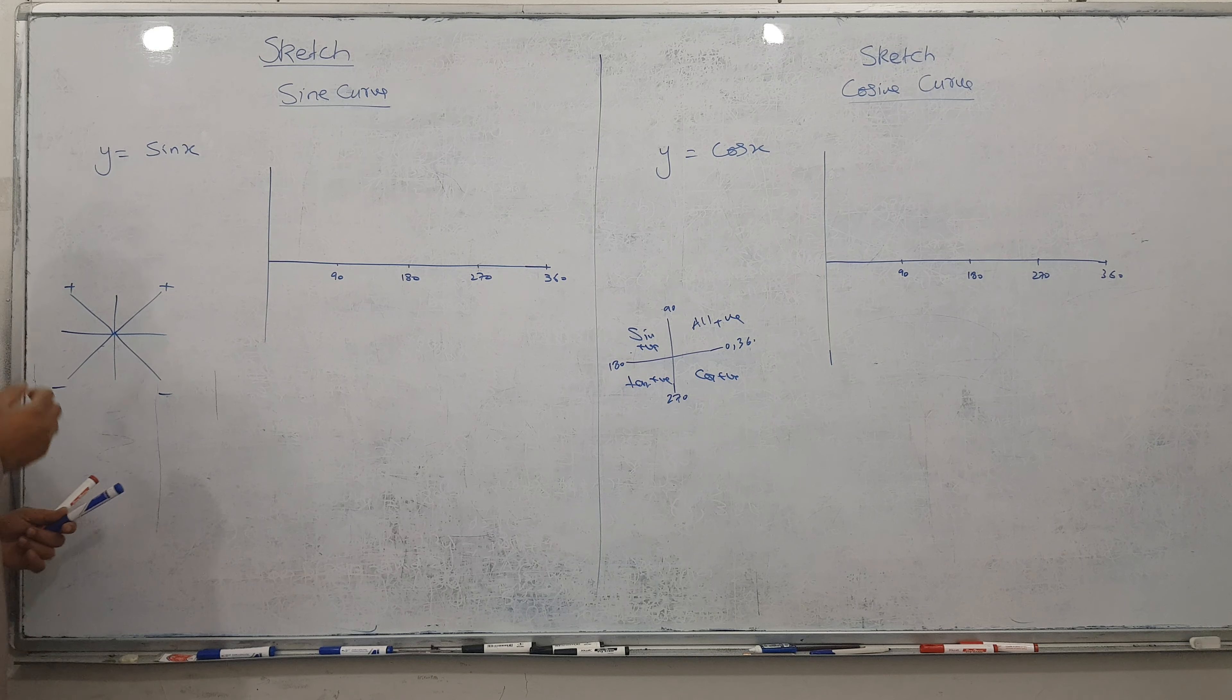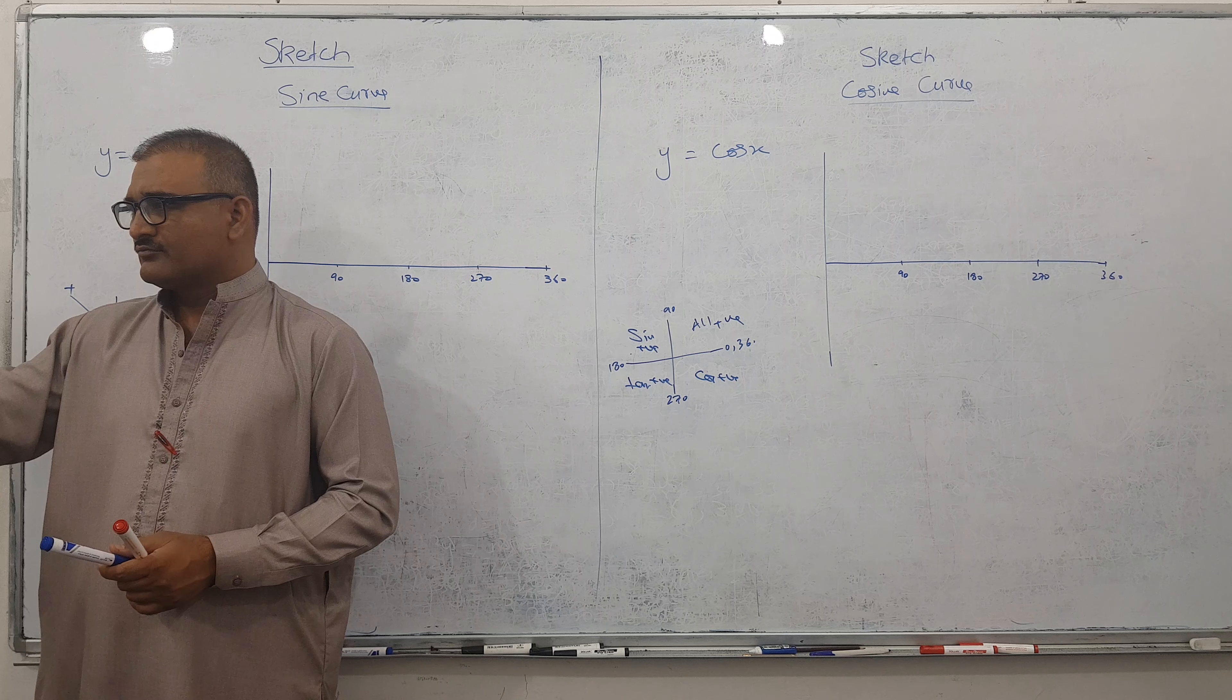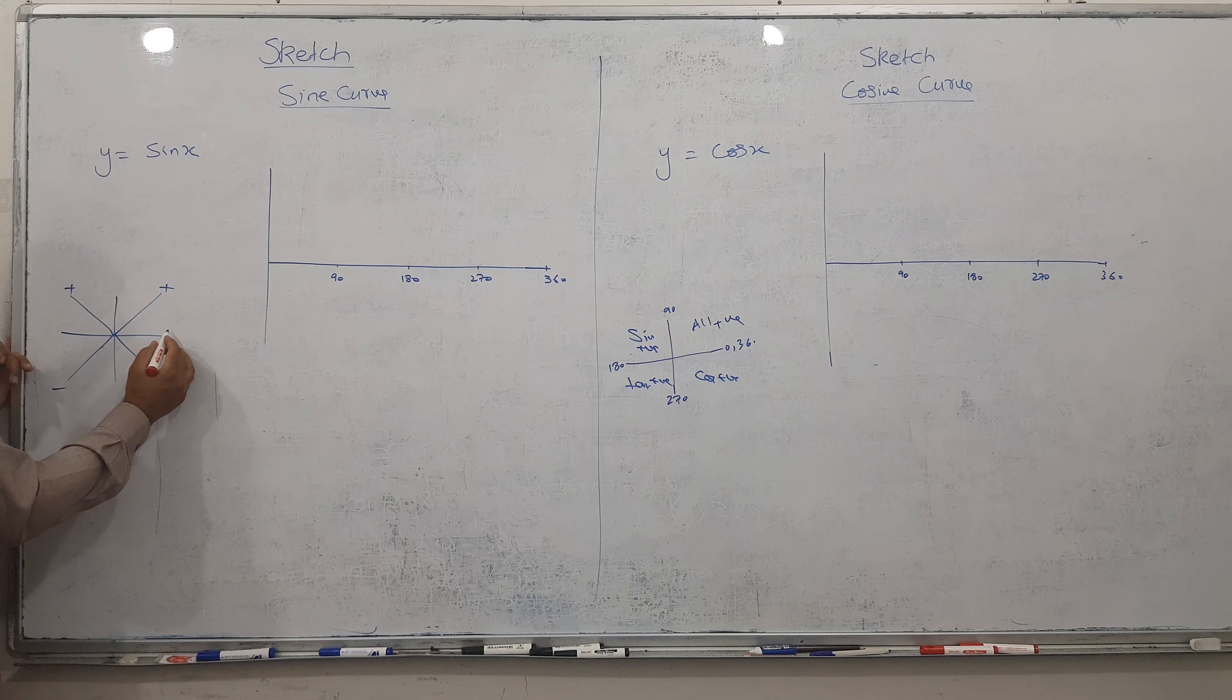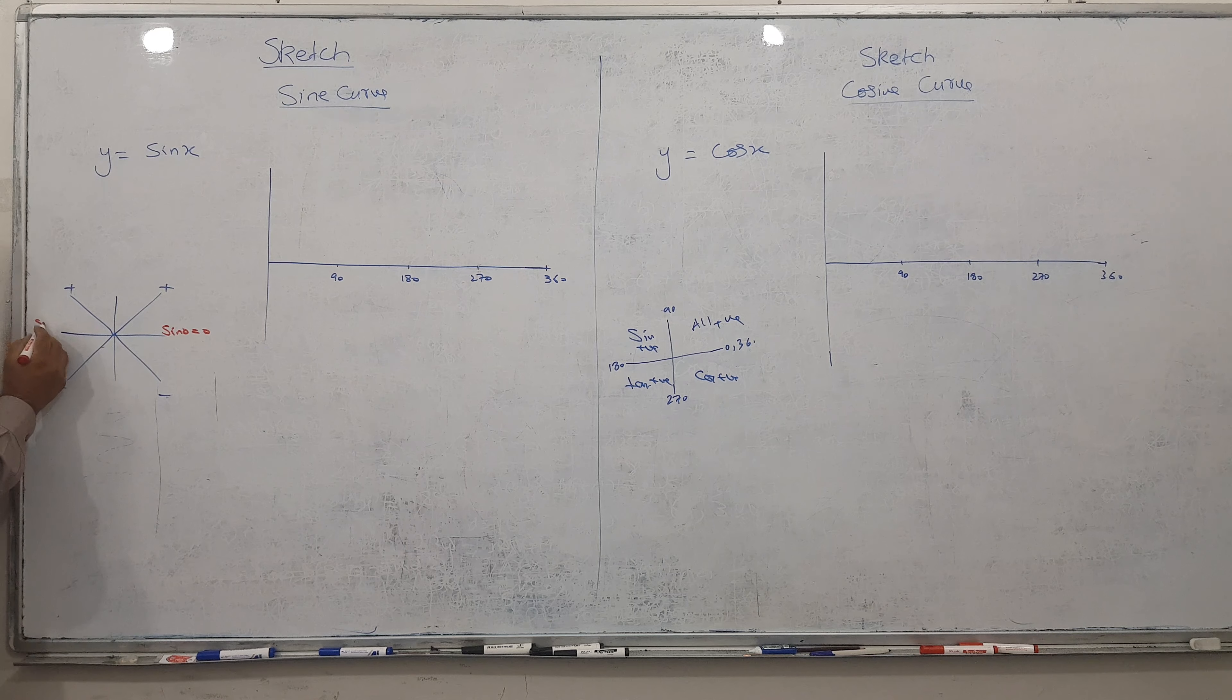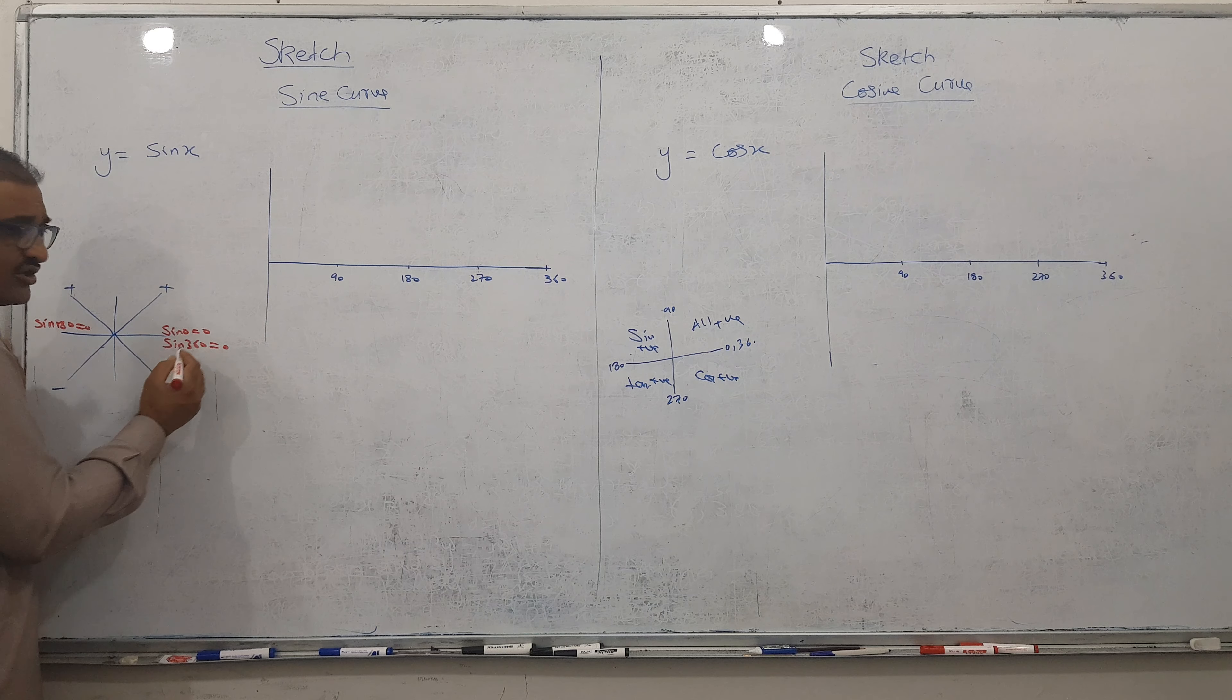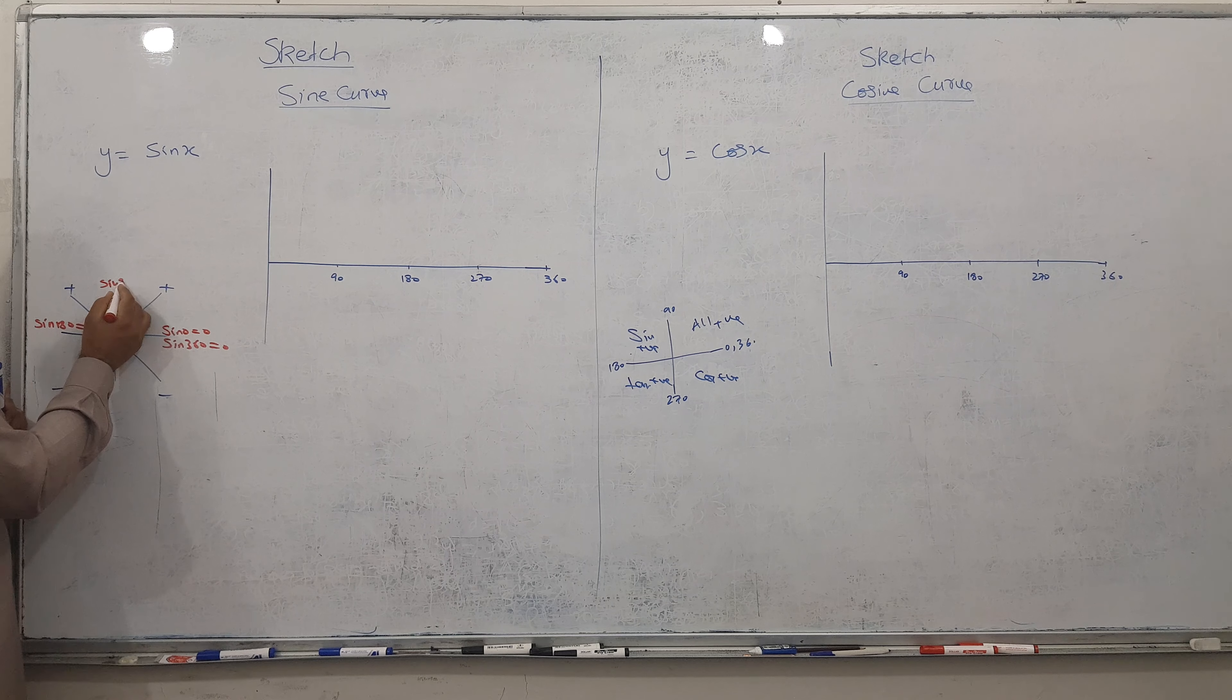One thing I always explain to my students: horizontally, sine is 0. Horizontally means on the x-axis, sine is 0. So this cross I made for sine. So I can assure sin 0 is 0. Sin 180 is again 0. Sin 360 is also 0. You can check. What about up and down? Up, sin 90 is 1.